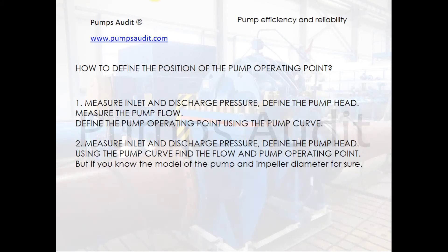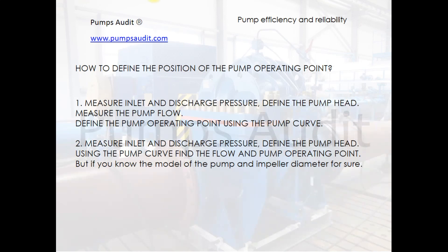First: measure inlet and discharge pressure, define the pump head, measure the pump flow, and find the operating point using the pump curve. In many cases, it is not possible to measure pump flow directly. In that case, measure inlet and discharge pressure, define the pump head, and use the pump curve to find the flow and the operating point — provided you know the pump model and impeller diameter.